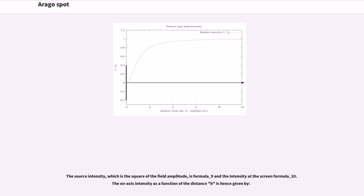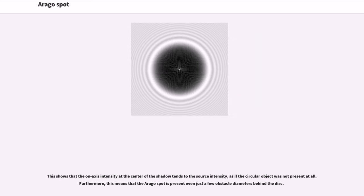The source intensity, which is the square of the field amplitude, and the intensity at the screen determine the on-axis intensity as a function of the distance b. This shows that the on-axis intensity at the center of the shadow tends to the source intensity, as if the circular object was not present at all. Furthermore, this means that the Arago spot is present even just a few obstacle diameters behind the disk.